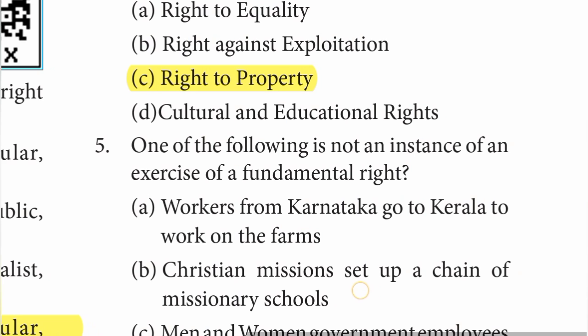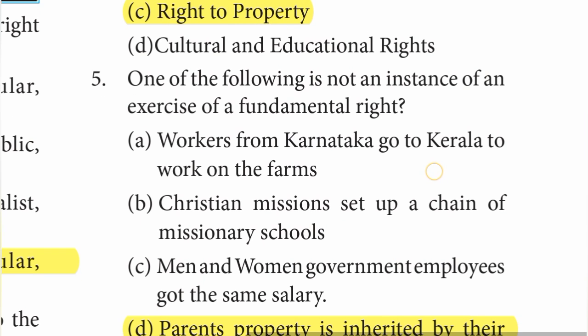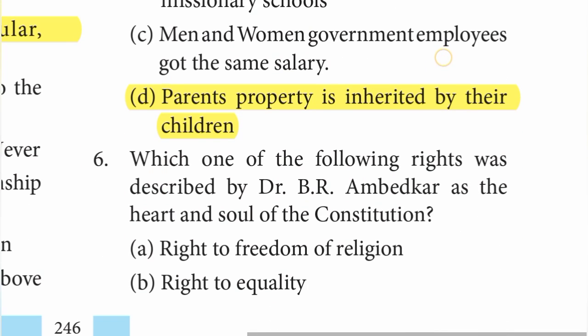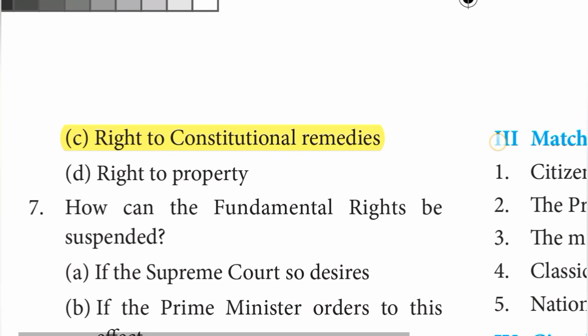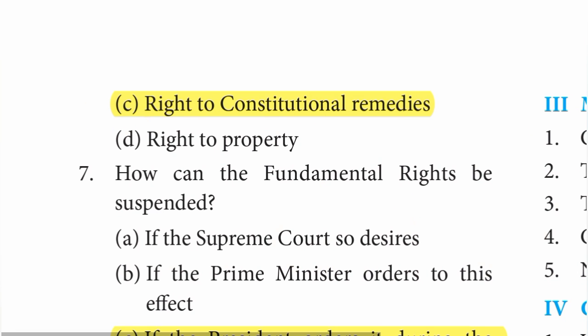Fifth: which of the following is not an instance of an exercise of a fundamental right? The answer is D option — parents' property is inherited by their children. Sixth: which right was described by Dr. B. R. Ambedkar as the heart and soul of the Constitution? The answer is C option — right to constitutional remedies.